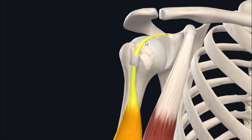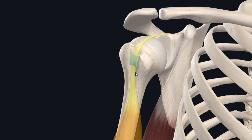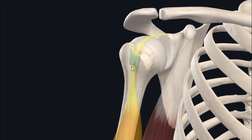The long head of the biceps brachii runs underneath a ligament known as the transverse humeral ligament. The long head is held in place by this ligament within a sulcus or groove known as the bicipital groove of the humerus. The bicipital groove of the humerus is formed between the greater and lesser tubercles of the humerus.